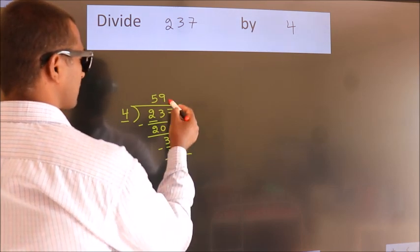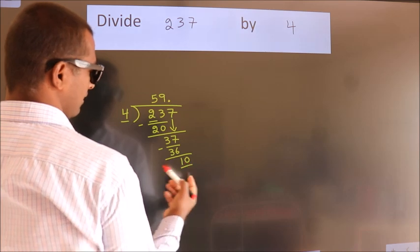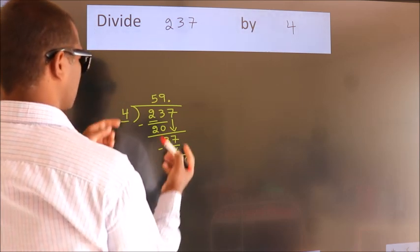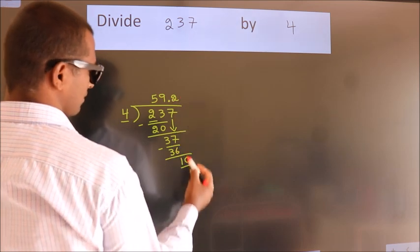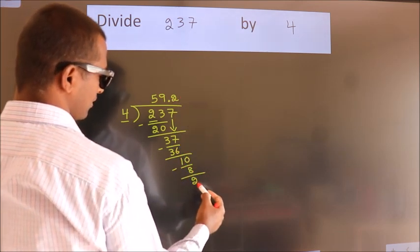So what we do is we put dot take 0. So 10. A number close to 10 in 4 table is 4 2s 8. Now we subtract. We get 2.